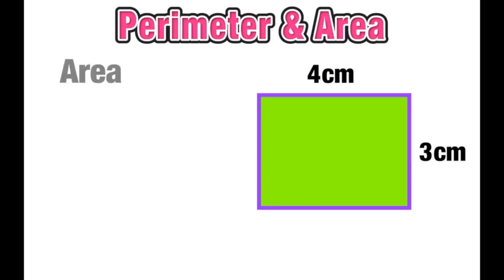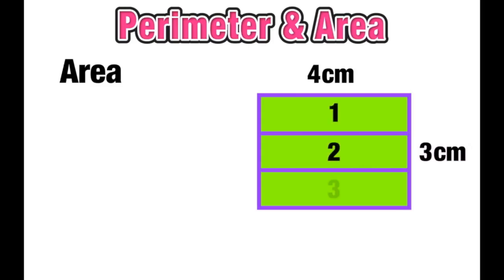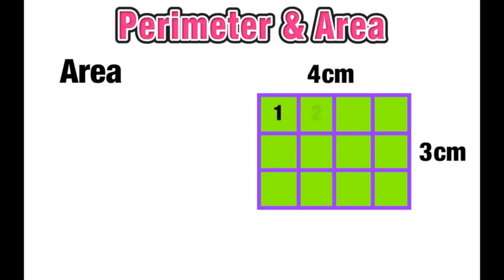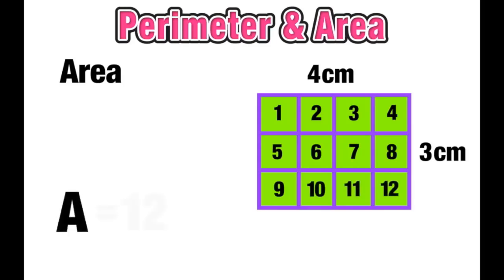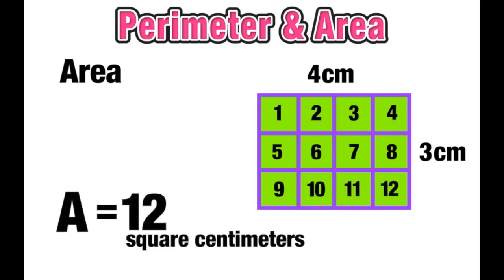Now, what if I wanted to find the area of this figure? The width of this rectangle is three centimeters, so let's visualize cutting this into three equal parts horizontally, one centimeter in width each. The length is four centimeters long, so we can imagine cutting this vertically into four sections that are also one centimeter each. This creates those square units, and now we can just count them up. This rectangle has a 12 square centimeter area.